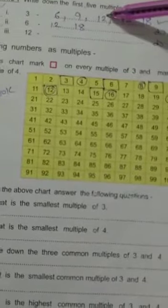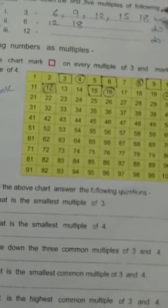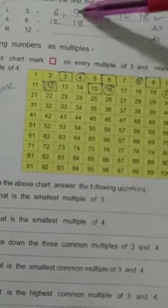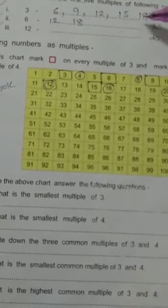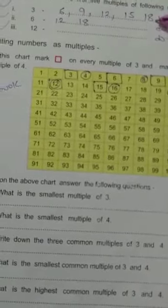3 threes are 9, 3 fours are 12, 3 fives are 15 and 3 sixes are 18. 1, 2, 3, 4, 5. These are the first 5 multiples of 3.